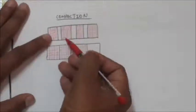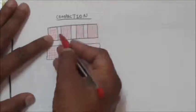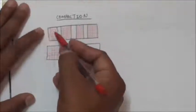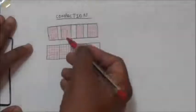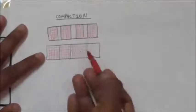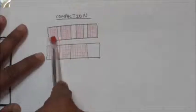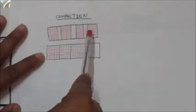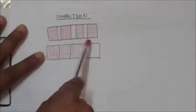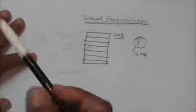When all the scattered free holes come together, they are combined to form a single large hole. In this diagram, the shaded portion shows occupied memory and the unshaded portion shows free available memory. Before compaction there are three free holes scattered in small pieces. After compaction, all free memory comes together to form a single large hole.